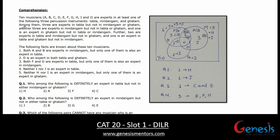Some conditions are given. Among them, three are experts in Tabla but not in M and G — so only Tabla is 3. Another three are experts in M but not in T and G — so only M is also 3.